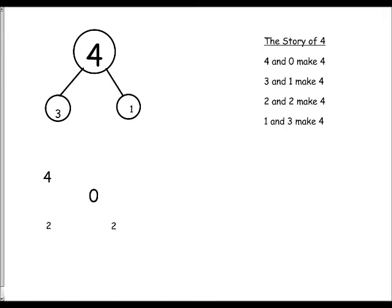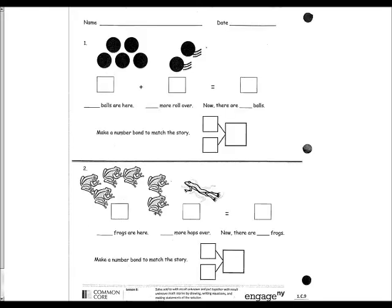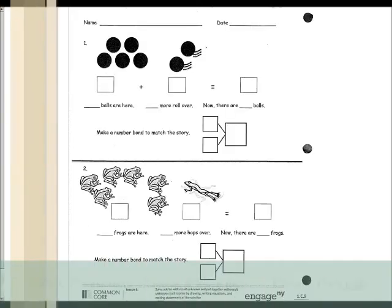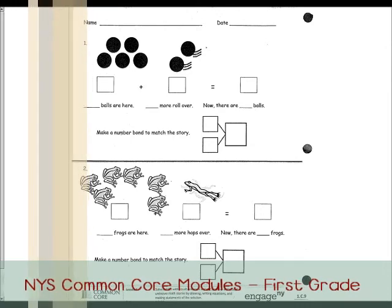Then we switch them out and do two and two make four. We do this through each number through 10 and keep them up as anchor charts in the classroom so students see those basic facts to ten. This is from the New York State Common Core and is introduced in early first grade.